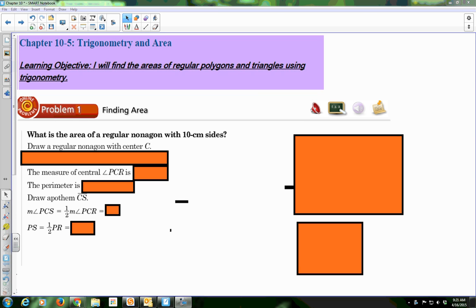Alright, so this is chapter 10-5, Trigonometry and Area. Our learning objective is that you will find the areas of regular polygons and triangles using trigonometry.